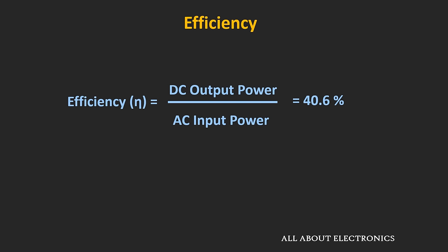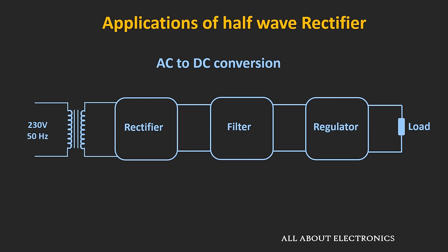These parameters can be improved by using the full wave rectifier circuit, which we will see in a separate video. Now before ending this video, let's see a few applications of this half wave rectifier. One of the most obvious applications is AC to DC conversion. Here the block diagram of a linear power supply is shown. At the first stage, the input voltage is stepped down using a step-down transformer, and then it is applied to the rectifier circuit. At the output of the rectifier circuit you get pulsating DC voltage. The ripple is reduced using a filter circuit, and any remaining variation is removed using a regulator circuit.